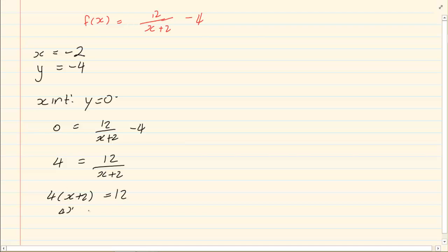This you should be ok with. So we have 4X plus 8 is equal to 12. 4X is equal to 4. X is equal to 1. Our coordinate would be 1 and 0.